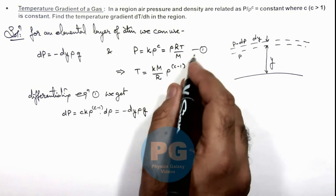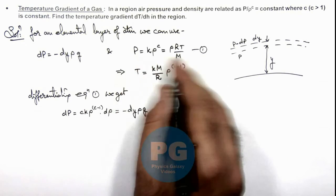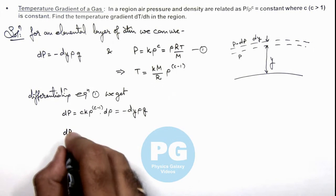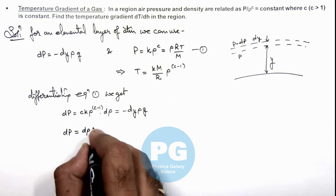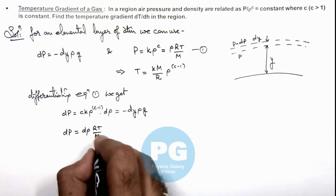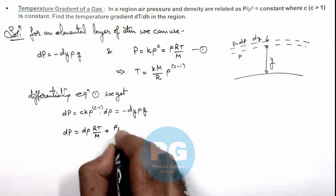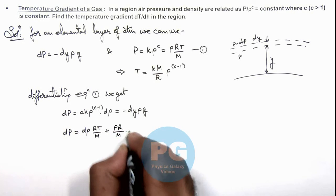Again from equation 1, if you differentiate first and third term here you can see d p is also given as d ro times r t by em plus ro r by em multiplied by d t.